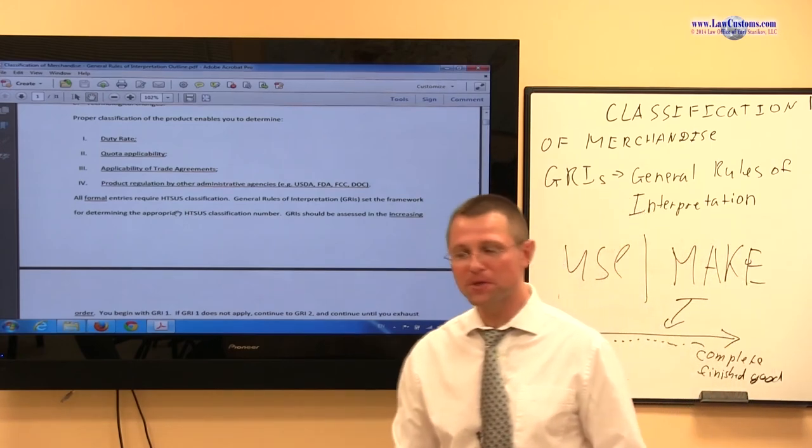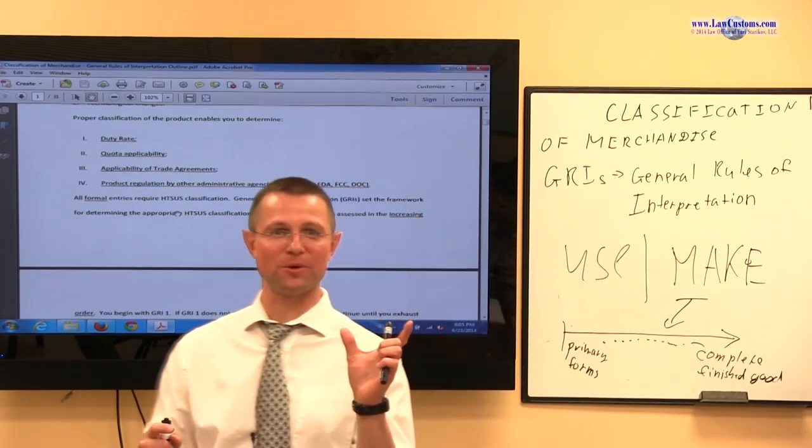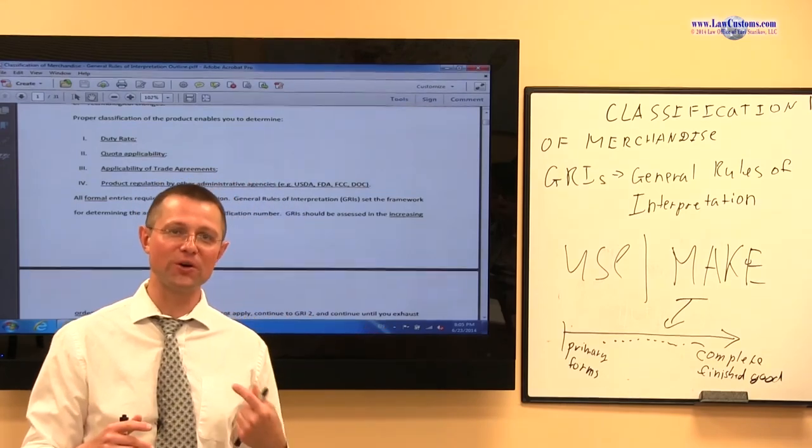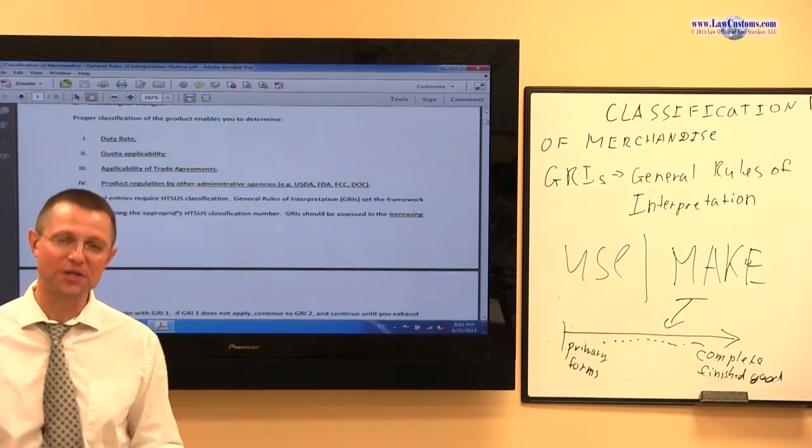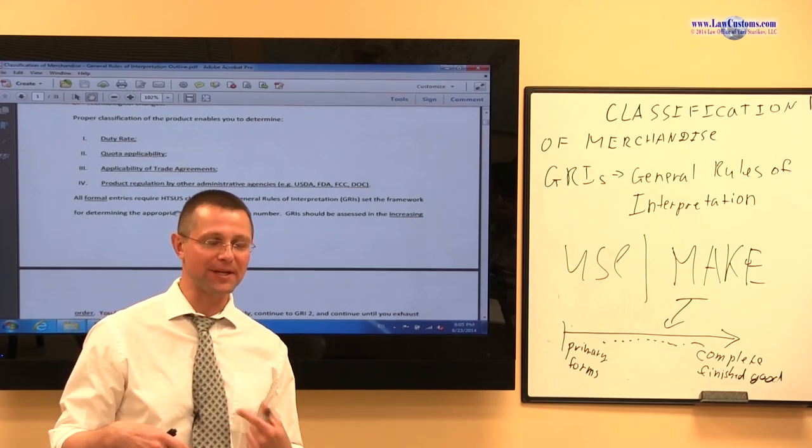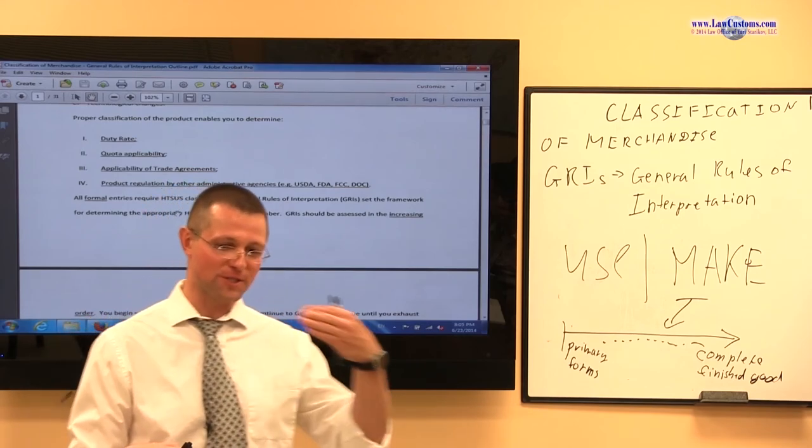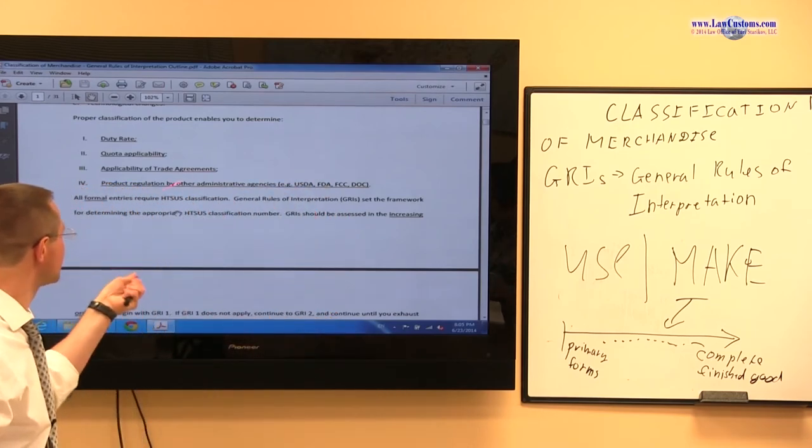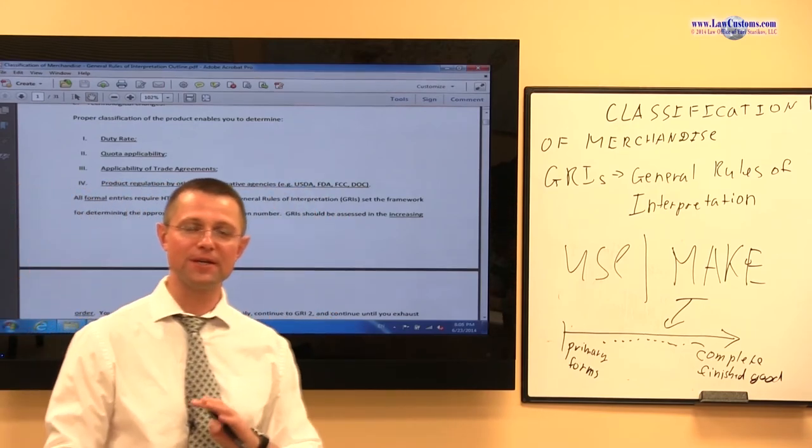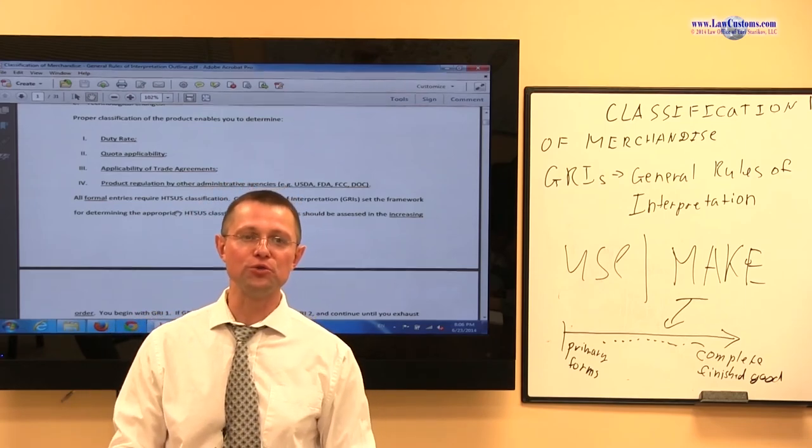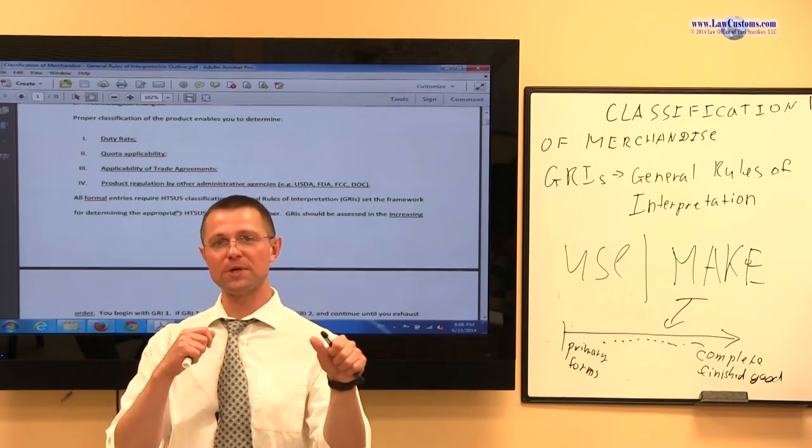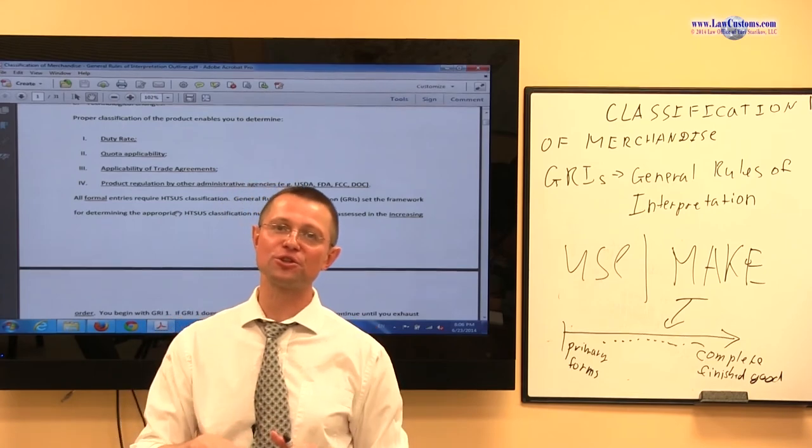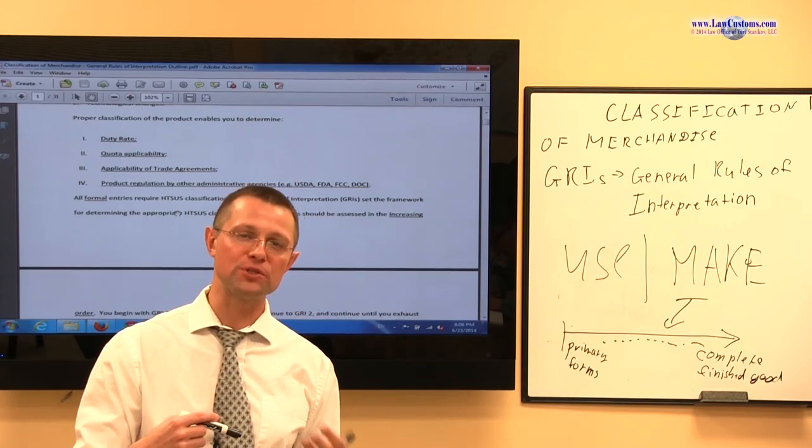So once we figured out that 10-digit number, because GRIs, General Rules of Interpretation, they really establish the methodology of how you classify something. They do not tell you about the duty rate, the quota, the trade agreements. They really tell you how you need to assign, how you put that 10-digit number label on for the particular product.